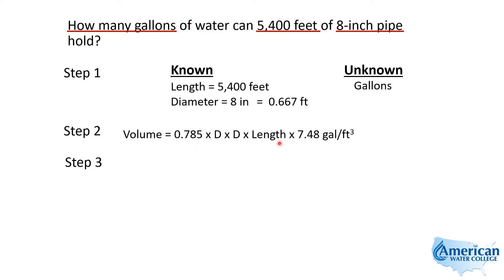And if this was a tank, this length would be depth. But in this case, it's the length of the pipe times this equivalent or this unit conversion that says there's 7.48 gallons per cubic foot. So what's happening here is this part of the formula, 0.785 times diameter times diameter times length, will give us our volume in cubic feet. We then multiply that by 7.48 gallons per cubic foot, and that'll give us our volume in gallons.